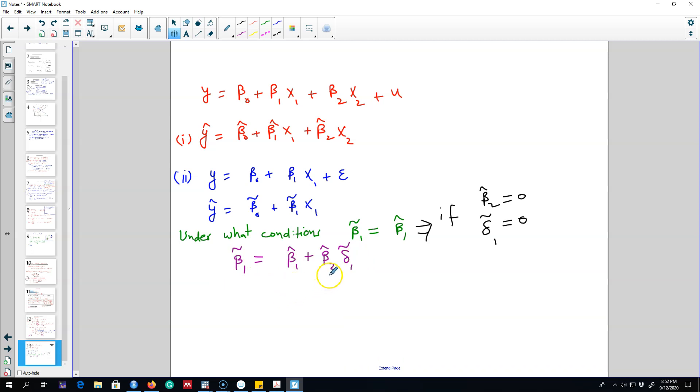So what are these two coefficients representing? Beta 2 hat is essentially the effect of x2 on y. If x2 is not affecting y variable then these two models are identical. If x2 is uncorrelated with our dependent variable y then these two models are identical and we may not need to include x2 in our model.